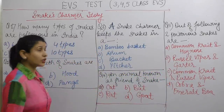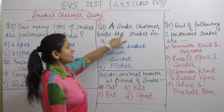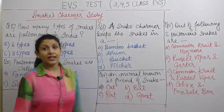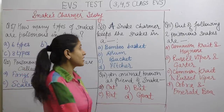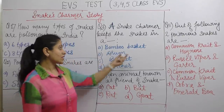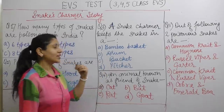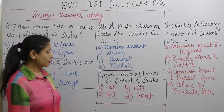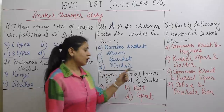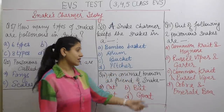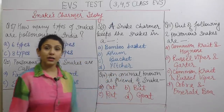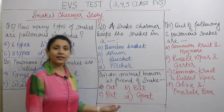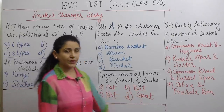Next question: A snake charmer keeps the snake in — bamboo basket, drum, bucket, or pitcher? Next question: An animal known as the friend of the snake — cat, bat, rat, or goat?